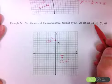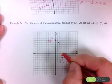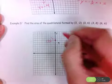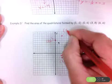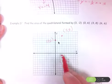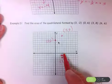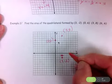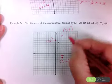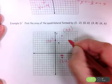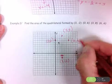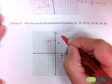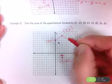Then the point three, eight — counting over three and up eight. And the last point is at six, six — over six and up six. Connecting these four points creates a four-sided figure known as a kite. It actually looks like a kite that you would fly, and it's a figure we study in geometry.